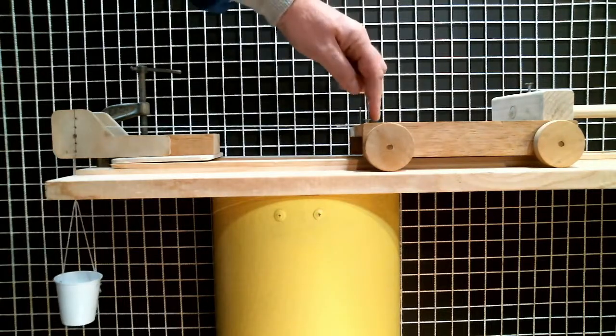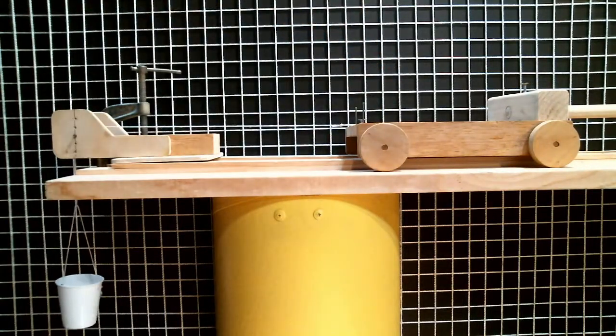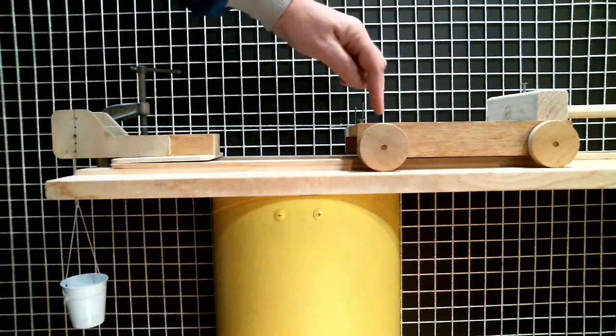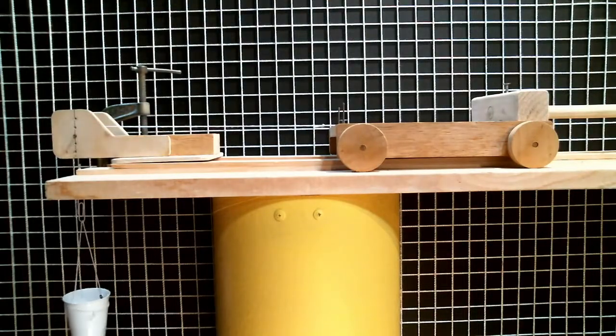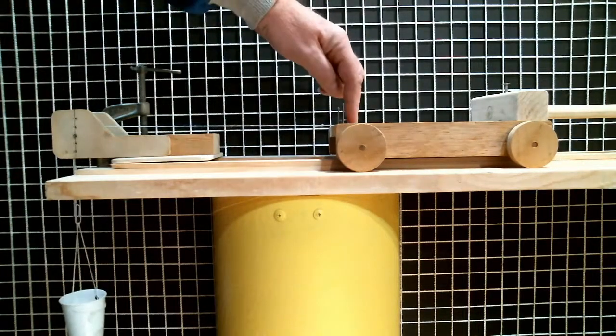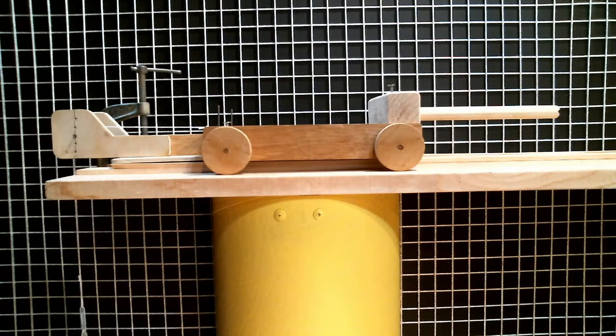Two pennies, small impulse, cart stops. Three pennies, small impulse, cart moves all the way to the stop. So that tells me the force I needed to overcome the dynamic friction, and that was four pennies.